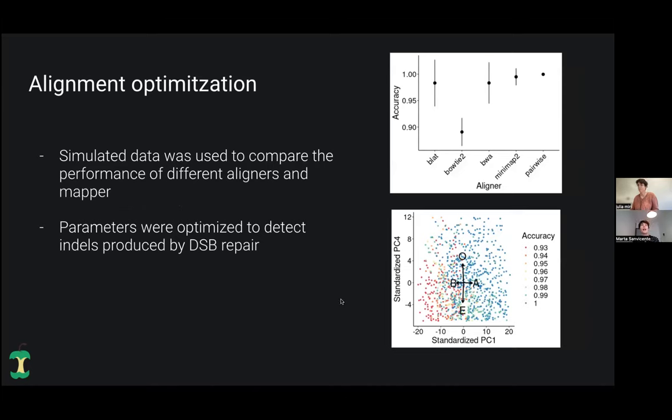You can choose the aligner that you want to use in the alignment step, but we have been exploring with simulated datasets, the performance of different aligners together with the following part of quantifying the different edits. What we have done is to optimize the parameters of minimap to achieve better results related to the identification of the indels produced by the double strand break repair mechanism.